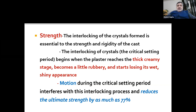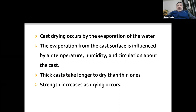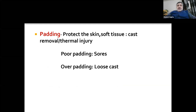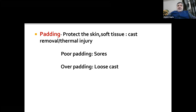Cast drying occurs by evaporation of water. Evaporation from the cast surface is influenced by air temperature, humidity, and air circulation about the cast. Thick casts take longer to dry than thinner ones, and strength increases as drying occurs. Padding protects the skin and soft tissues during cast removal and also prevents thermal injury. Poor padding will lead to pressure sores and over-padding will lead to a loose cast, so padding has to be appropriate. When we apply a plaster cast, it should not compress the padding by more than 50%.